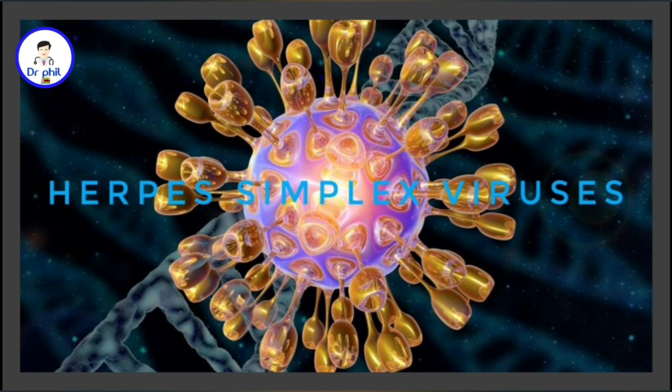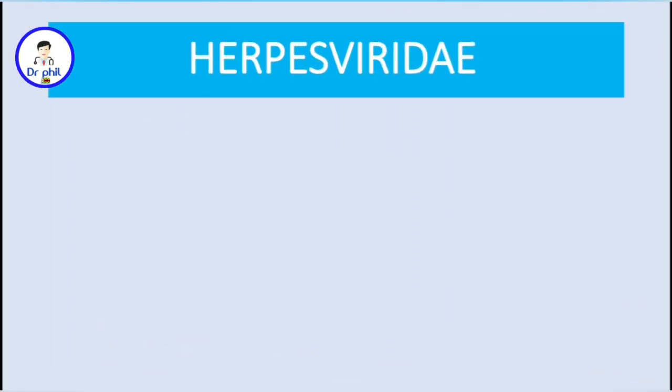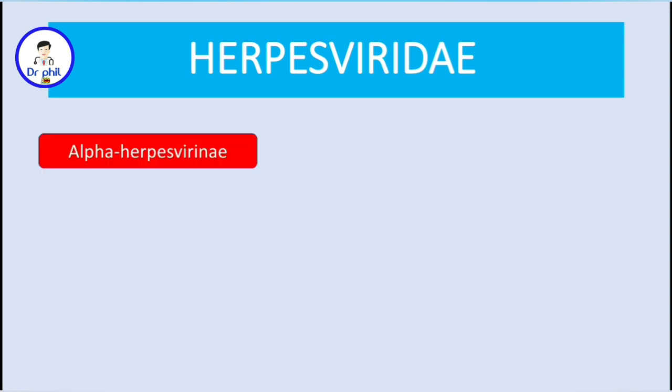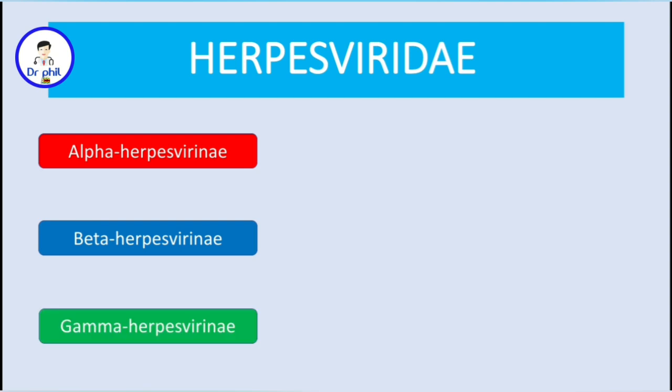In this video, we are going to talk about the herpes simplex viruses. But before that, I would like to introduce the Herpesviridae family. The viruses in this family can be divided into three sub-families: alpha-herpesvirinae, beta-herpesvirinae, and gamma-herpesvirinae.